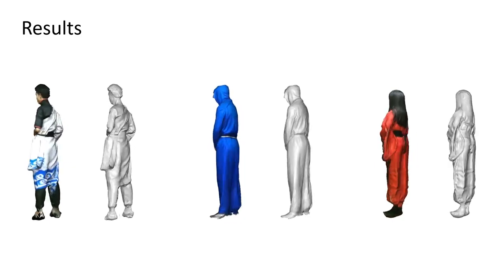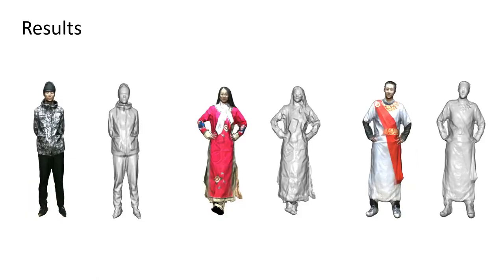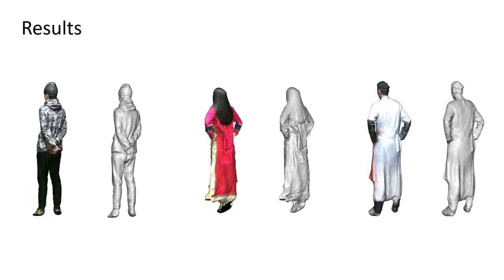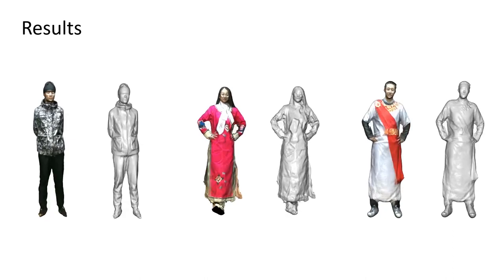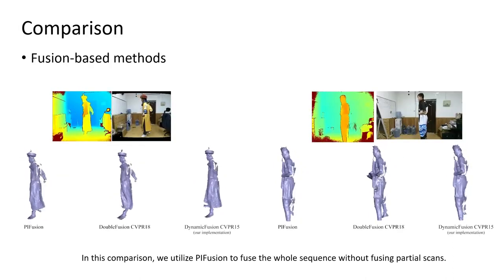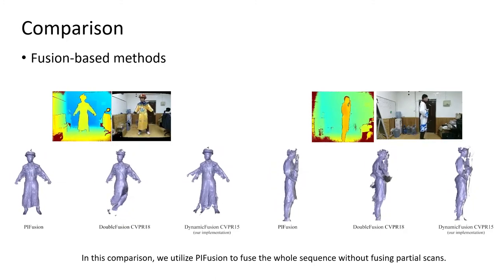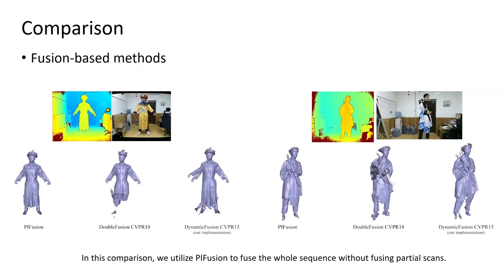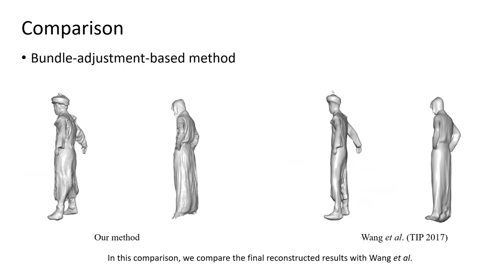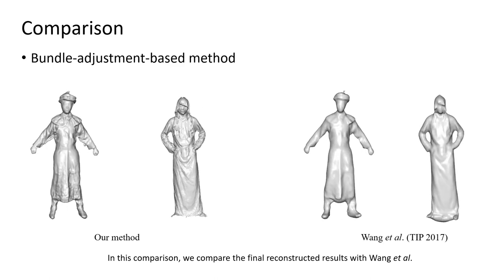Here are some example 3D self-portraits generated by our method. We compare the proposed PIFusion with DynamicFusion and DoubleFusion, and our method can achieve more robust tracking. We also compare our method with the state-of-the-art bundle adjustment method, Wang et al., and our method can reconstruct an accurate 3D self-portrait.